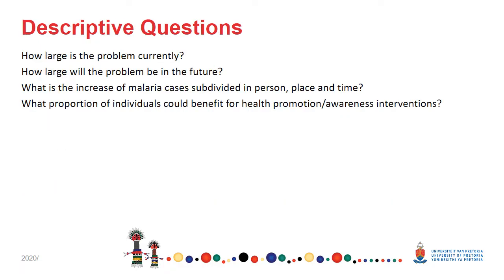There might be a number of descriptive questions that you would like to ask. This will be: how large is the problem currently? How large will the problem be in the future potentially? What is the increase in malaria cases subdivided by person, place, and time? And maybe you also want to know what proportion of individuals could benefit from health promotion or awareness interventions? I took some of these questions and did a search on work that has already been done to show you, when someone has asked these different types of questions, what some of the research publications have been in this area.